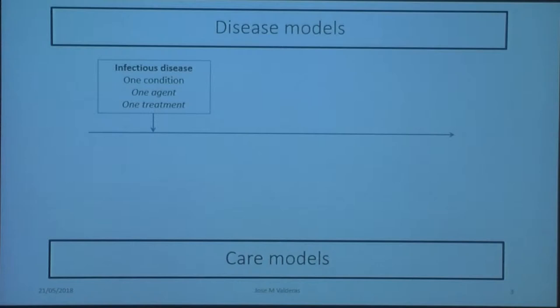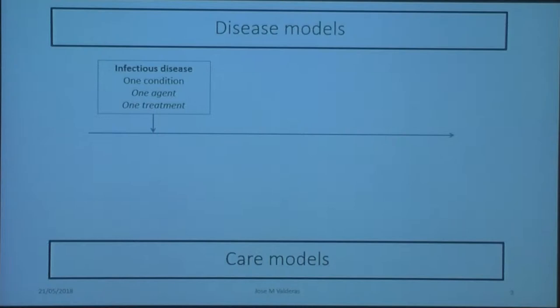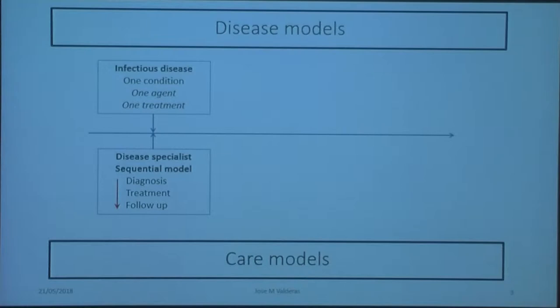So under the infectious disease model, you tend to have one condition, which was caused by a single agent and typically would have one treatment. And that lent itself very well for a sequential model from diagnosis, treatment, and follow-up, and then let the patient go, hopefully cured, with the disease specialist at the top of the food chain.